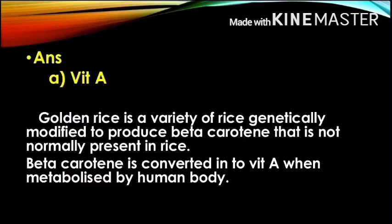What is Golden Rice? It is a variety of rice which is genetically modified. It contains beta-carotene, which is genetically modified into the rice. Beta-carotene is the same as Vitamin A. That is why it is called Golden Rice — it is genetically modified to contain beta-carotene.